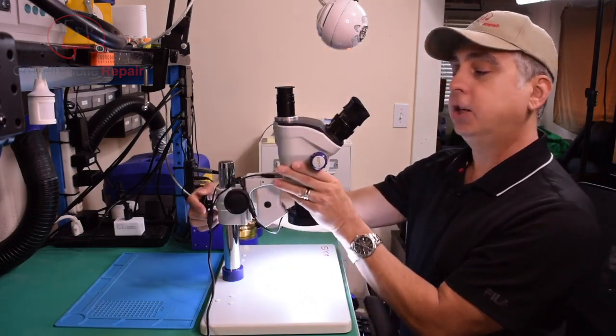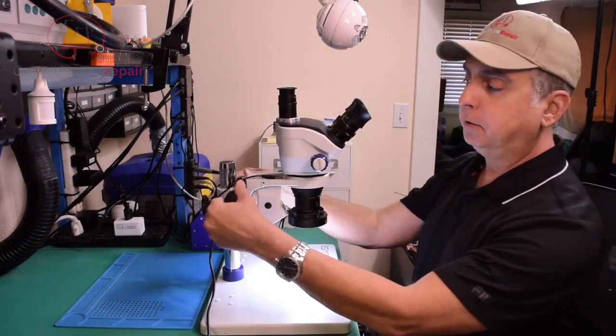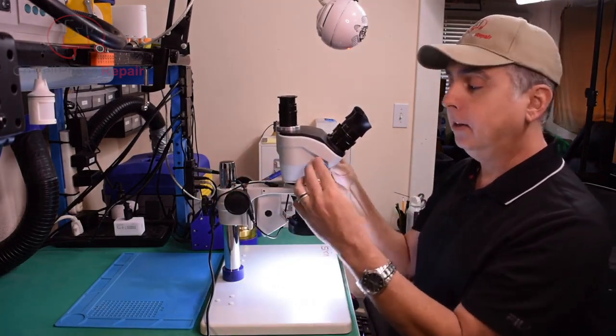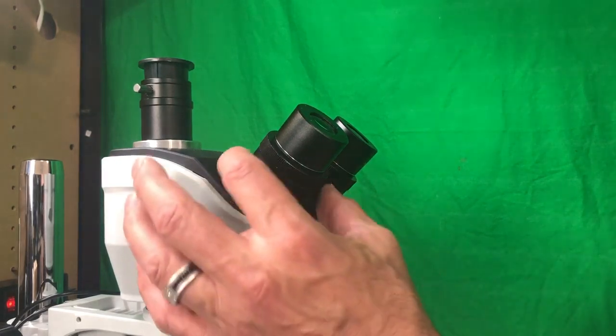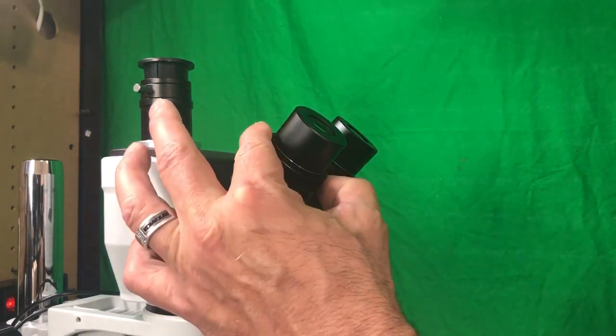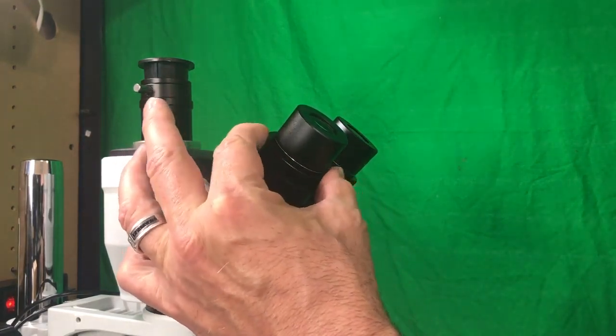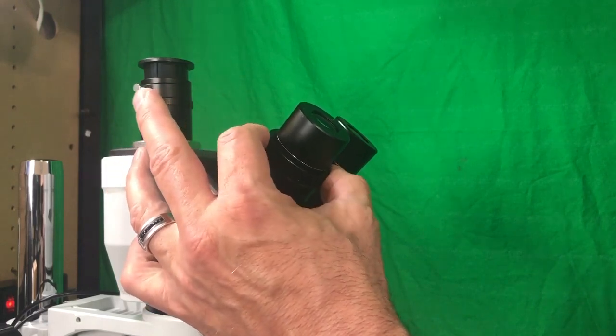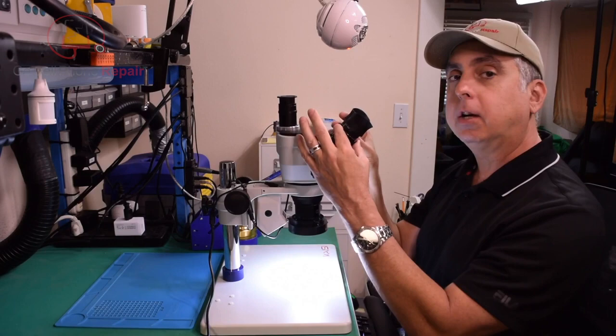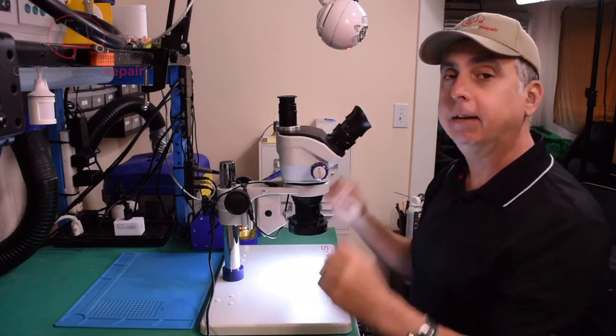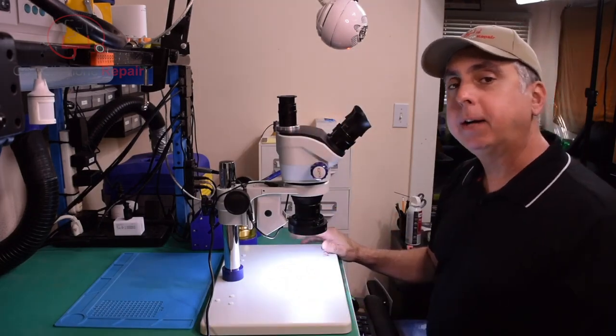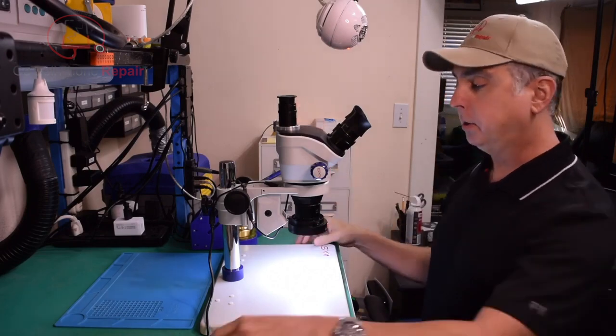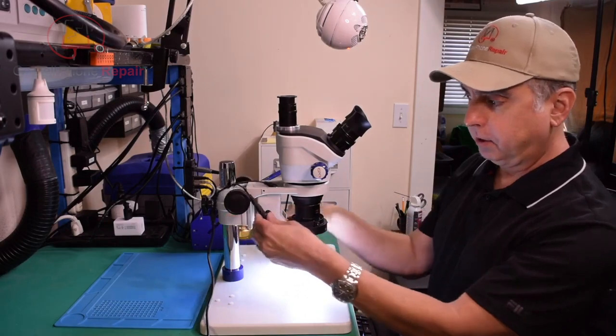Once you have that adjusted properly and you've tuned in your main focus which is right back here, you've got your zoom right here, and then you can individually focus either one of these eyepieces. If you have a slightly different vision or a different prescription for your glasses one eye to the other, it's easy to compensate for that and make everything nice and focused. Depending on what type of microscope camera you have, it may be necessary to change out the hardware here on the top.